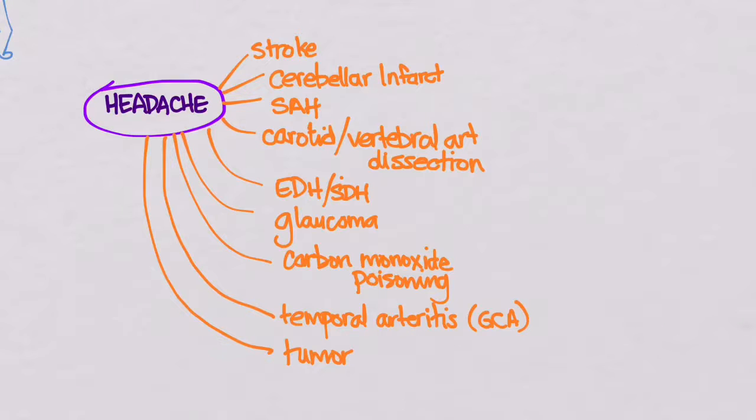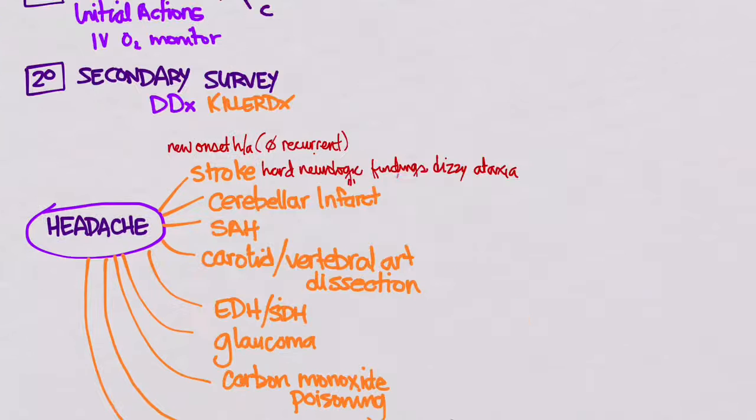So now we have to decide what are the distinguishing features of all of these headaches. We're going to build our illness scripts for these. We know that those primary headaches tend to be recurrent, and so most of these tend to be the first time that they've had these headaches. So new onset, not recurrent, would probably fit in all of the illness scripts for all of these. For the stroke syndromes, you're going to have some hard neurologic findings. That means findings that would match an area of a stroke, like hemiparesis, aphasia. And maybe they have some dizziness and ataxia. And actually, I would put that under the cerebellar infarct, which causes the dizziness and ataxia.